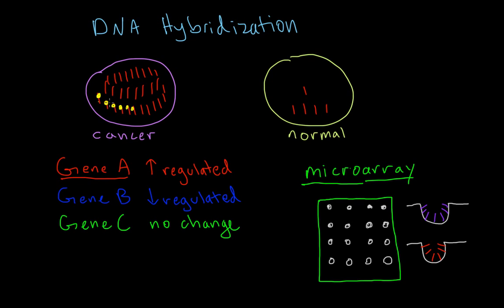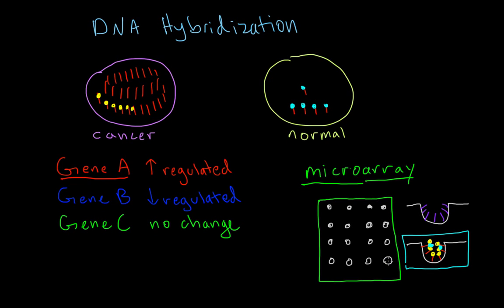Let's say we label every mRNA from the cancer cell with a yellow fluorescent label, and the mRNA from the normal cell with a blue fluorescent label. We break both cells apart and add the intracellular contents to the well. Since we have lots of yellow-labeled mRNA, a lot of it binds to the complementary strands, giving us a really bright yellow well. Adding the normal cell contents gives us only a little blue.